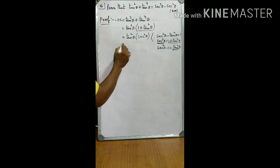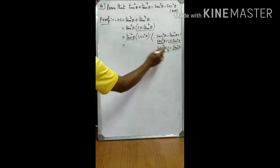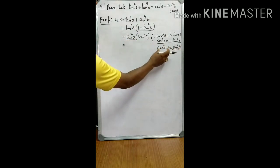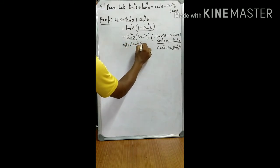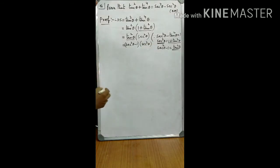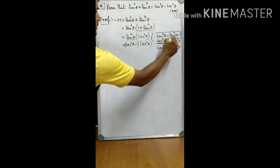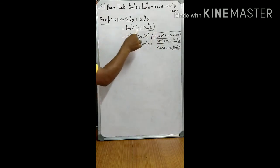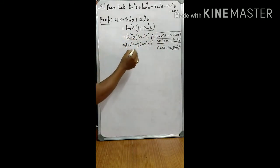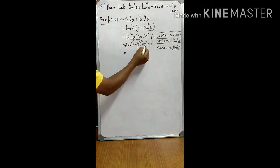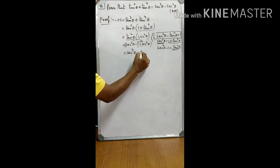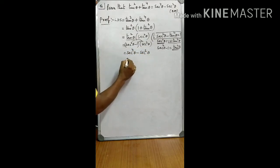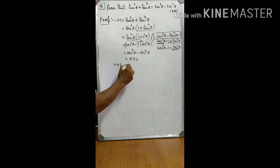In the next step, tan squared theta can be written in terms of secant as secant squared theta minus 1, giving us secant squared theta minus 1 into secant squared theta. By using this identity we rewrote tan squared theta in terms of secant squared theta. Now distributing, secant squared theta into secant squared theta minus secant squared theta into 1 gives secant power 4 theta minus secant squared theta. This is the RHS. So LHS is equal to RHS.